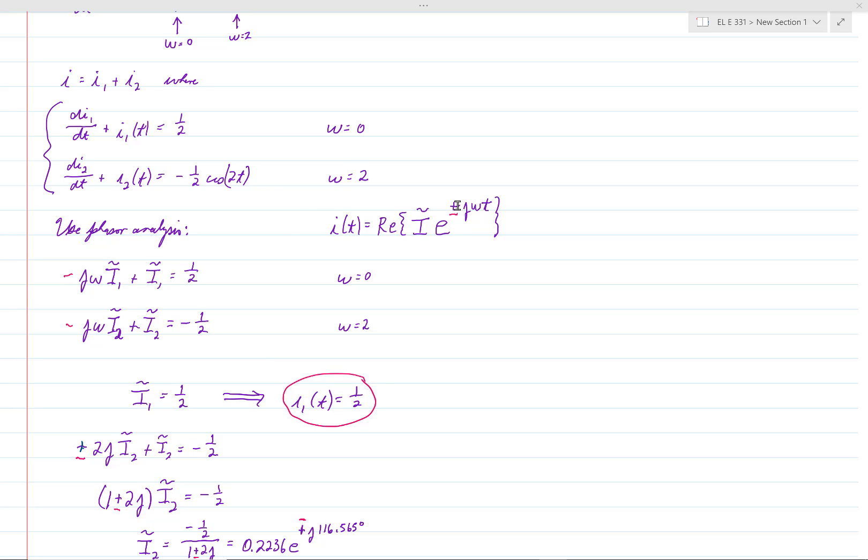If you changed it, and instead of having plus j omega t, which is what our book has, if we had minus j omega t instead, it would make a few differences. But in the end, you get the same result. And that's what I'm going to show you.